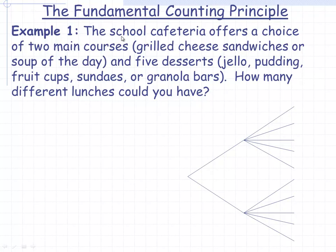In this first example, we have a school cafeteria that offers a choice of two different main courses. The person could either have a grilled cheese sandwich or the soup of the day, and five possible desserts: Jell-O, pudding, a fruit cup, a sundae, or a granola bar. The question is, how many different lunches could you have?